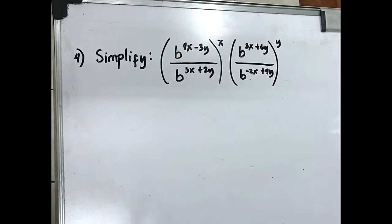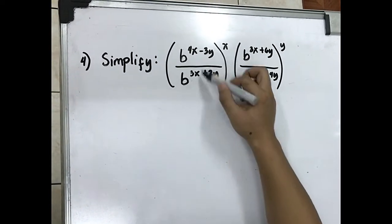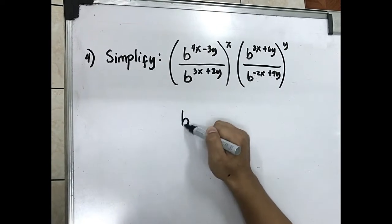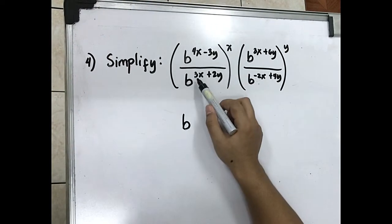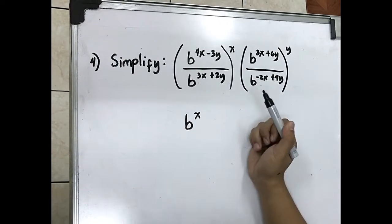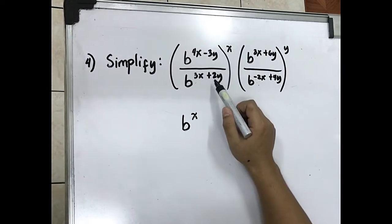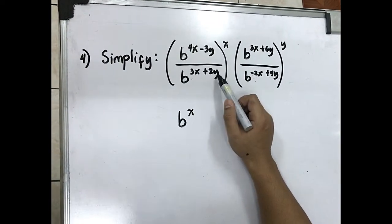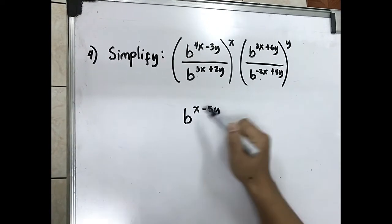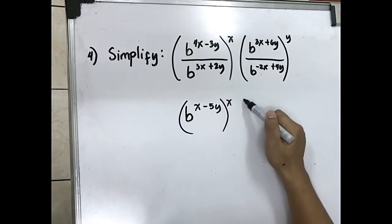Laws of exponents: if we have the same base, subtract the exponents. So we have: 4x minus 3x, negative 3y minus 2y is negative 5y, minus 2x.